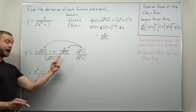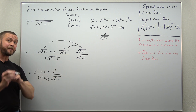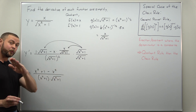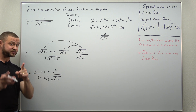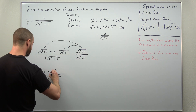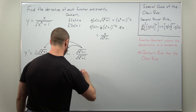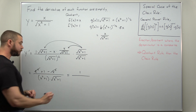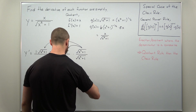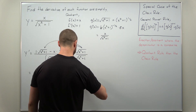Notice how quickly that simplifies. This trick of multiplying the numerator and denominator by the LCD gets you to a simplified result with no fractions within fractions very quickly. Notice you can cancel the x squared terms, and what we're left with is one in the numerator, and in the denominator x squared plus one times the square root of x squared plus one.